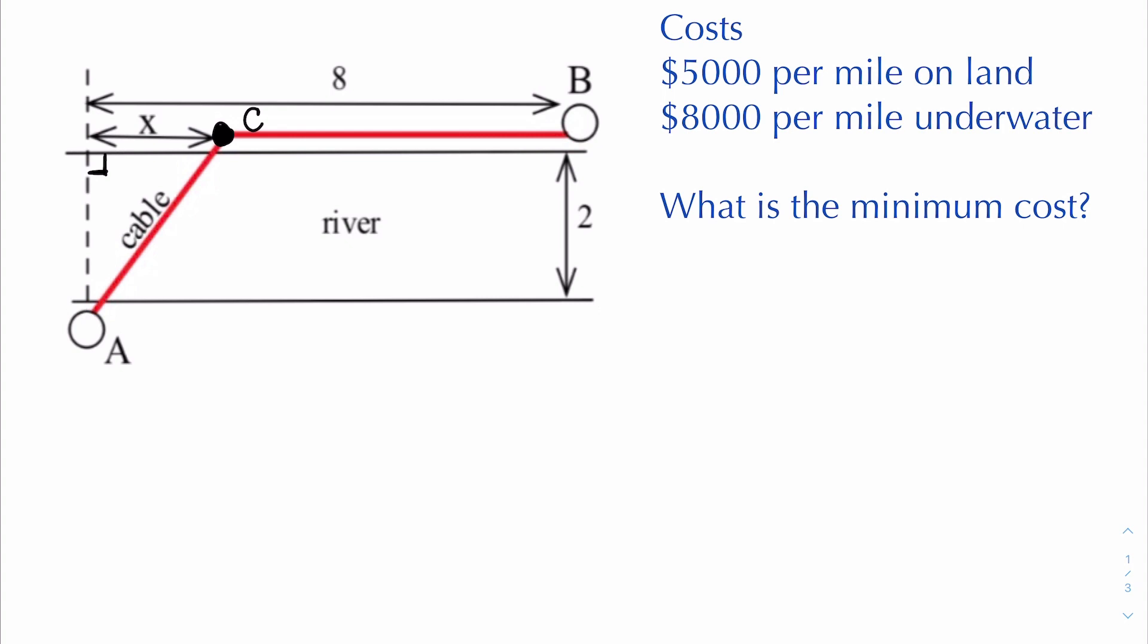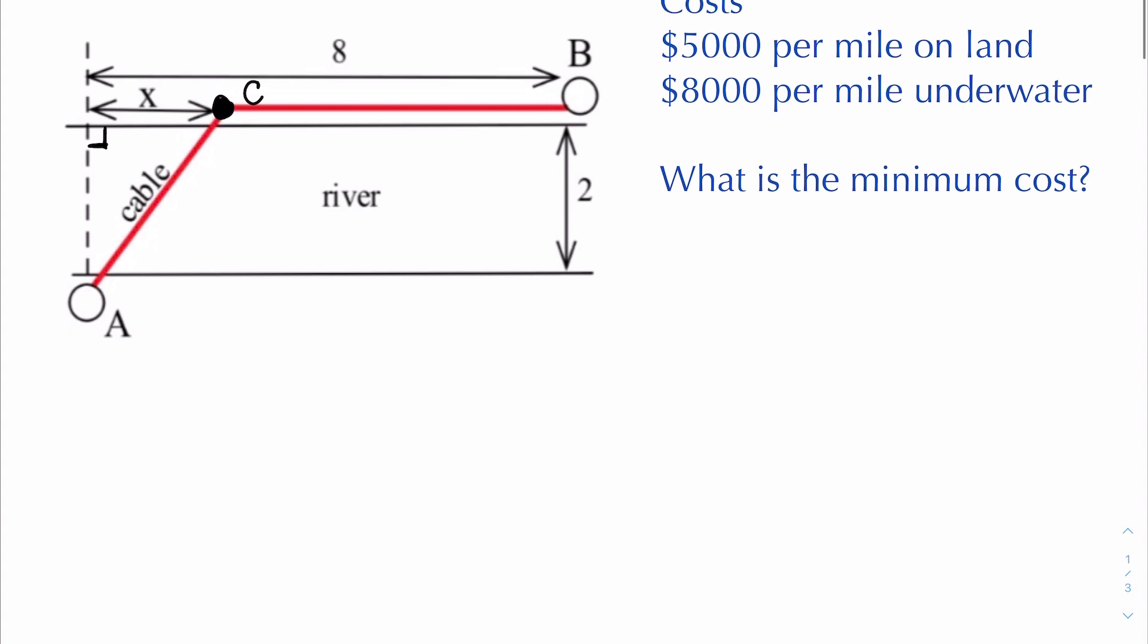The other possible path is if we go directly from A to B, and while that is the shortest distance, the problem is it's also the most expensive when it comes to materials. $8,000 per mile and we're using all of the distance underwater, so that could really drive the cost up. So what we do is we pick a point along the shoreline for the cable to stop and then we don't go the rest of the way down the shoreline. Maybe that'll end up with an optimal solution.